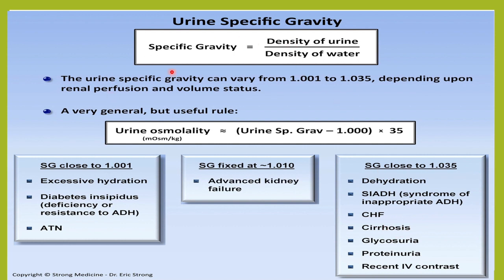When specific gravity is less — when the density of urine is less, when the concentration of urine is less, when the solute concentration is less, or when there is a lot of water — that can happen in case of excessive hydration, in case of diabetes insipidus, etc. This is how specific gravity will vary.